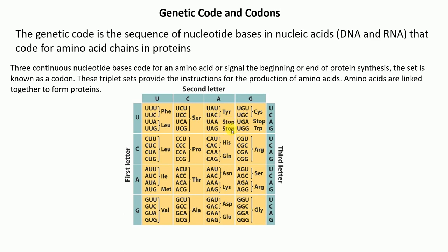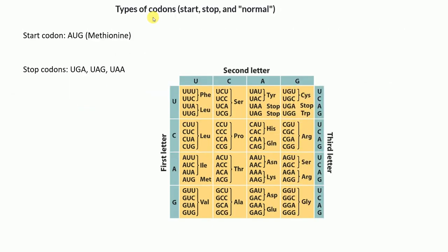Similarly, UAG and UGA are also stop codons — they don't code for any amino acid. A codon can also be a start codon. The general start codon is AUG, which codes for methionine. In summary, codons are three continuous nucleotide bases that code either for an amino acid, or serve as start or stop codons.